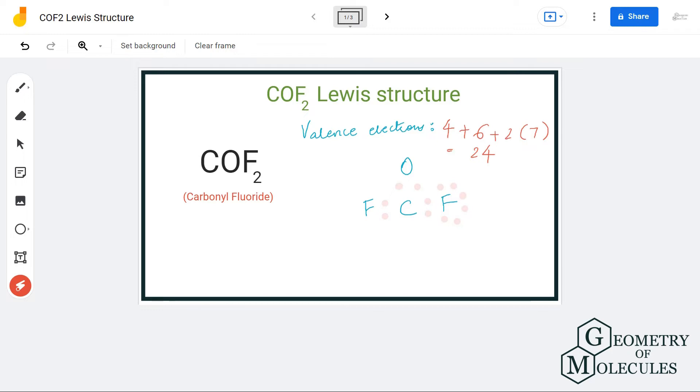If you look at the structure closely, you will come to know that oxygen and two fluorine atoms need six valence electrons to have a complete octet. So I am going to place six valence electrons around these atoms: six around oxygen atom, six around fluorine atoms. Doing that, we will be using up all our 24 valence electrons.